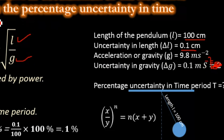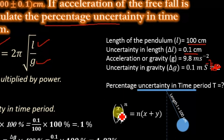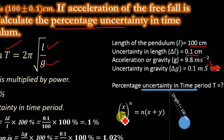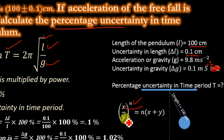We will calculate the percentage uncertainty in the time period T of this pendulum. The formula used is: for a quantity x/y raised to power n, the percentage uncertainty is n times (percentage uncertainty in x plus percentage uncertainty in y). Here, x represents the uncertainty in length δL and y represents the uncertainty in gravity δg.